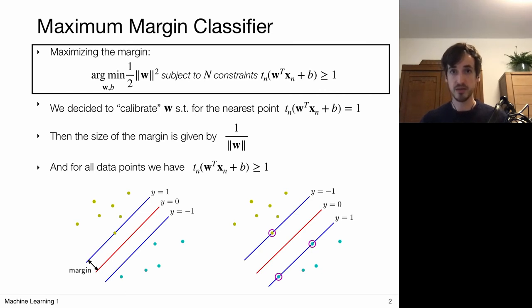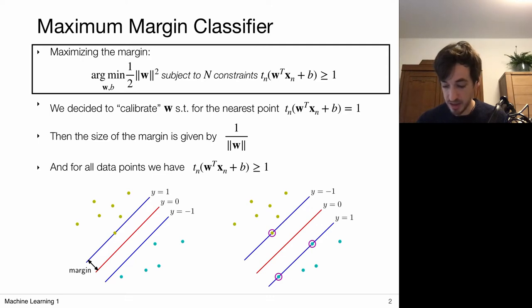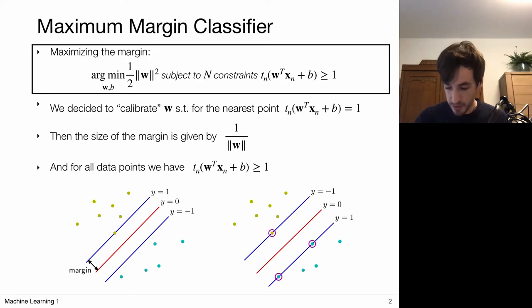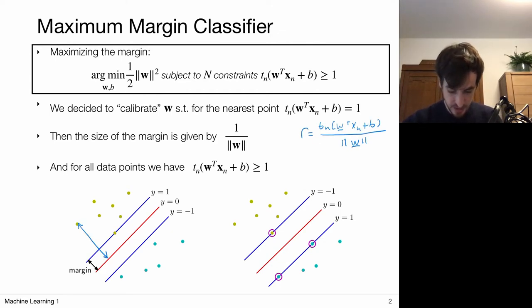Previously we considered the optimization of linear classifiers by the principle of maximizing the margin. A linear classifier bases its predictions on a linear decision boundary — points on one side are assigned to one class, and points on the other side to the other class. We reason that we want to maximize this margin because that gives us the most stable linear classifier. We derived an expression for the distance of each point to the decision boundary, and we let the closest point define the margin.